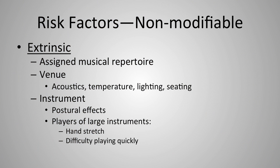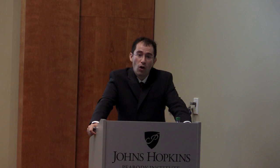For singers, tessitura and timbre are important non-modifiable considerations. Non-modifiable extrinsic factors include assigned musical repertoire — sometimes conservatory students don't have a choice — venue, acoustics, temperature, lighting, and seating. The instrument itself also matters: postural effects it produces, and for large instruments like the double bass, difficulty playing fast passages and the need to stretch the hand to greater lengths.